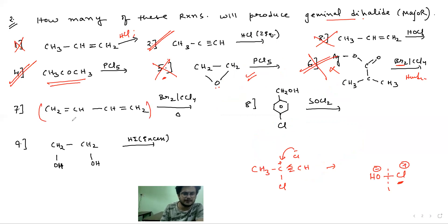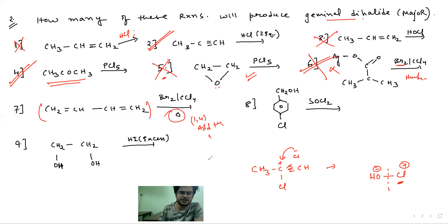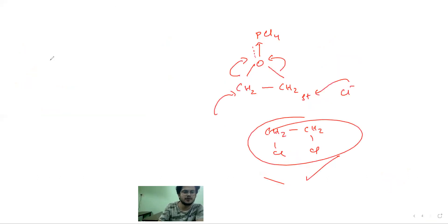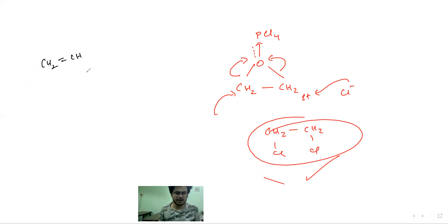Then this is important: CH2=CH–CH=CH2. What will happen here? This is 1,4-addition. How do you know? High temperature and heat — at high temperature, the thermodynamically controlled product (TCP) is dominant. With HBr, thermodynamically controlled products form even at room temperature. But for Br2/CCl4, you need to heat it a little bit, and after that you get the thermodynamically controlled product.